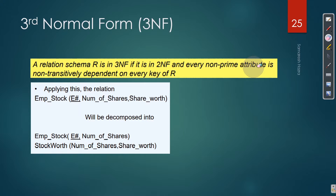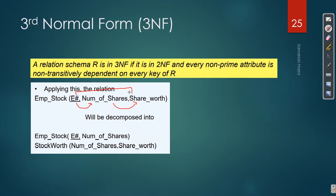So every non-prime attribute is non-transitively dependent on every key of R. In the previous example we did - the employee stock relation with employee ID, number of shares, and share OD - if we give employee ID we get number of shares, and from number of shares we get share OD. This is a transitive dependency: from employee ID we get share OD transitively.